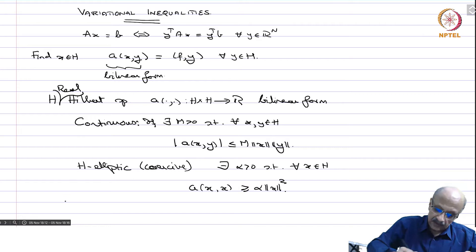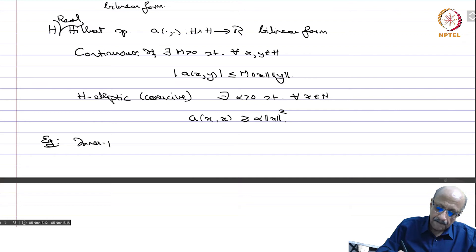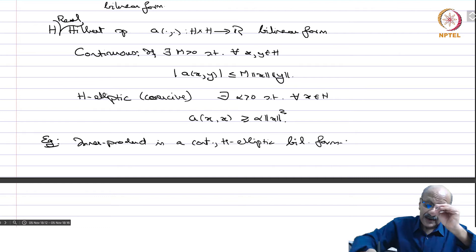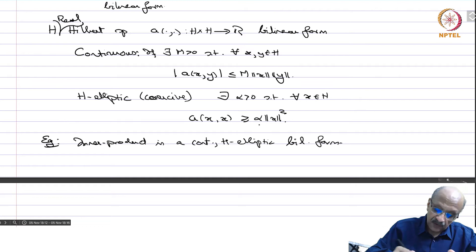As an example, the inner product is a continuous H-elliptic bilinear form. It is bilinear, and it is continuous by the Cauchy-Schwarz inequality. It is H-elliptic because A(x,x) gives you norm(x) squared itself, so alpha equals 1.